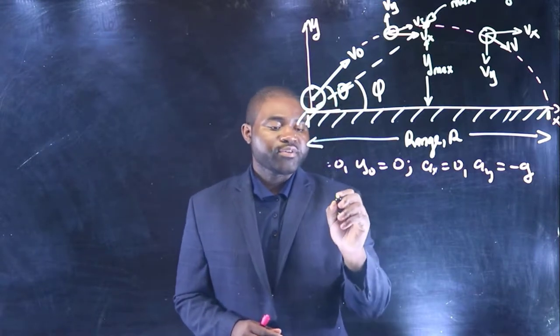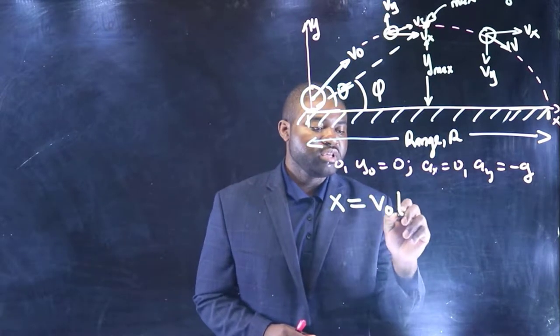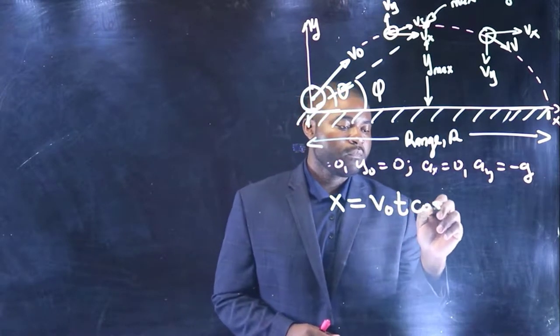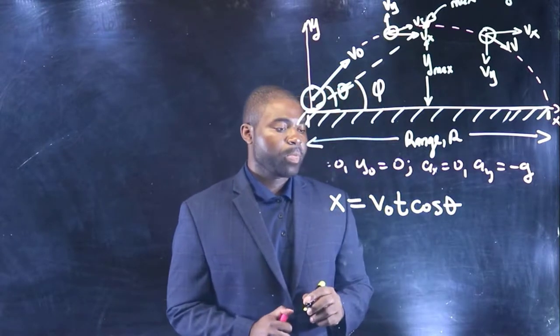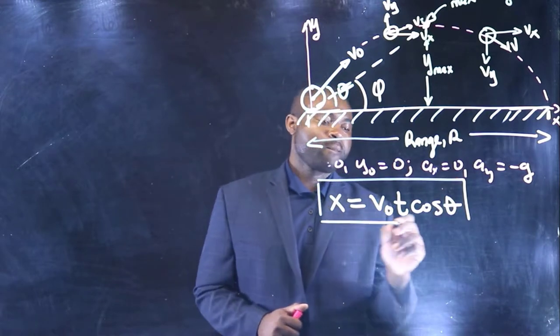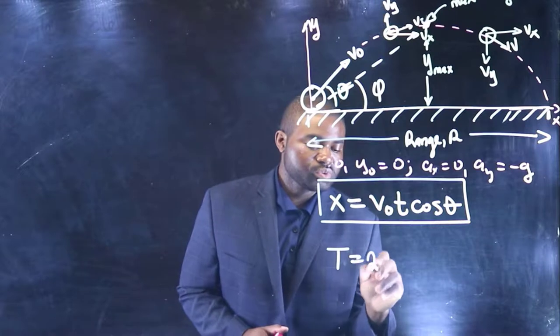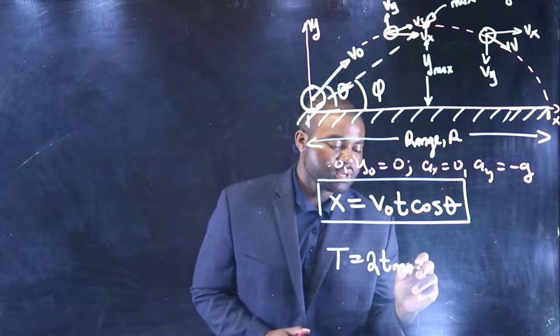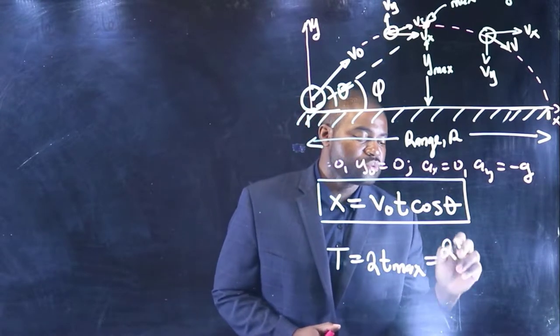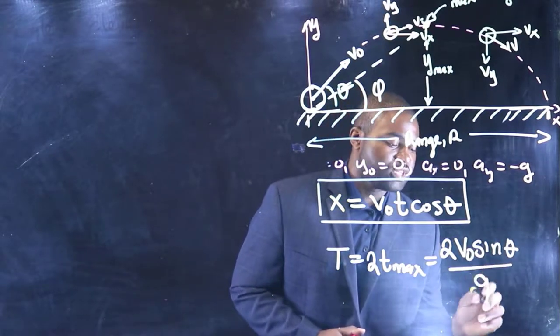So X is generally given by V naught T cosine theta. The time of flight, capital T, is 2 times the time to reach maximum height, which is 2 V naught sine theta all divided by G.